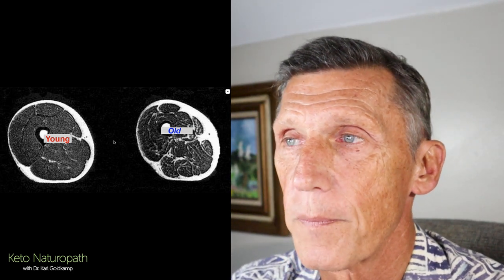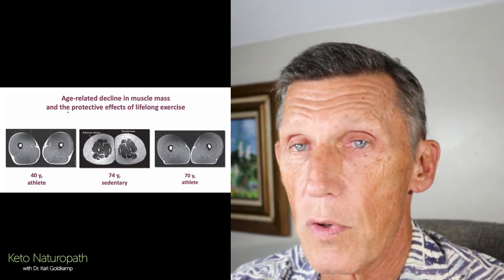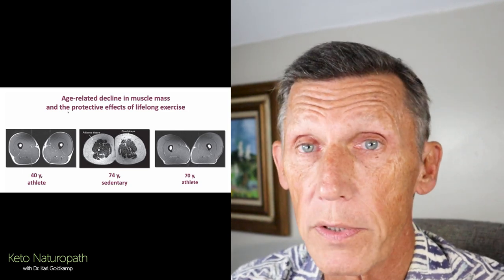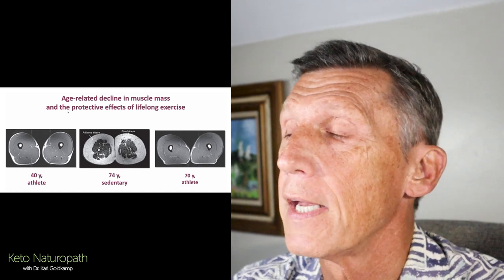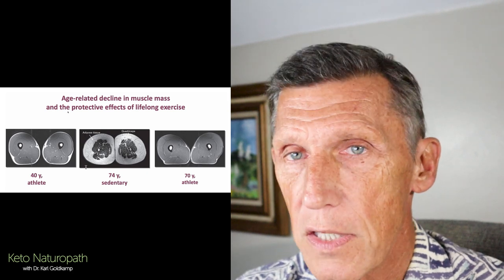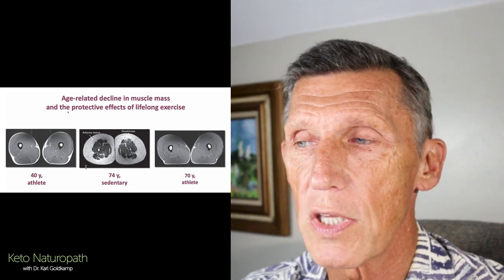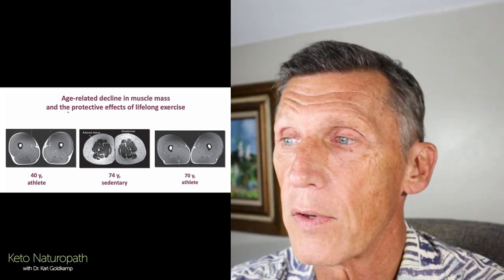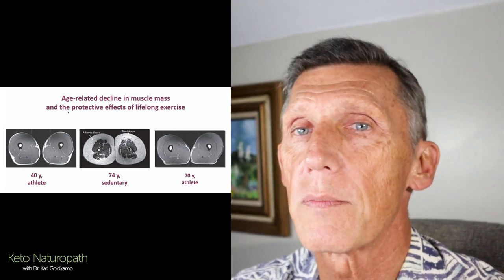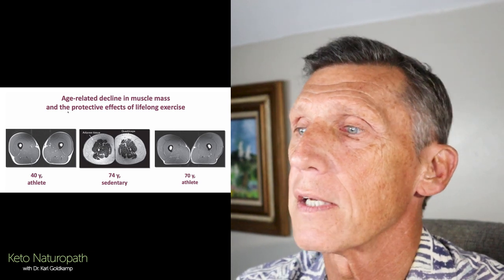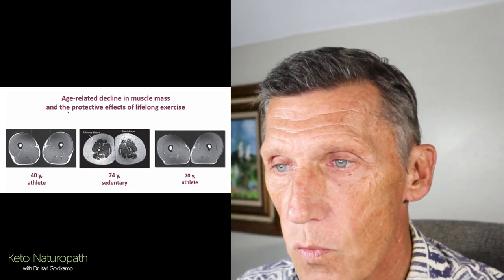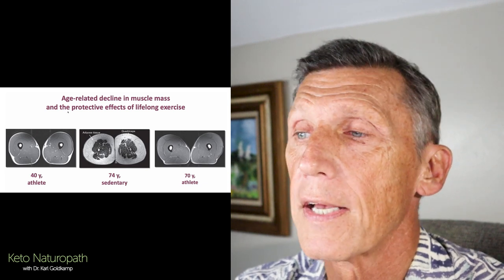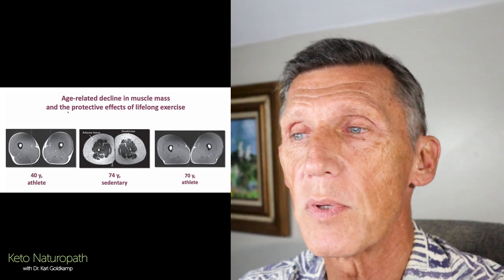We can avoid that situation. Here's what it looks like when somebody avoided it: a 40-year-old athlete, a 74-year-old sarcopenic normal individual, and a 70-year-old athlete. Clearly the onus is on the individual to change this. Look at the 70-year-old's muscle mass — looking down the legs — their ability to maintain very precise blood sugar and free fatty acids is exquisite. This person in the middle has all sorts of problems. This can be changed — that's step one.